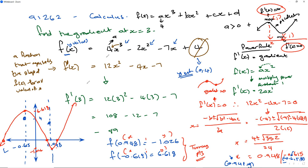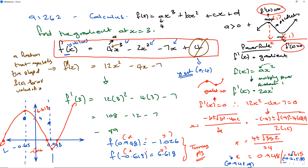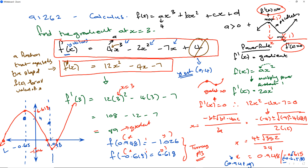Overall, we were given f(x) = 4x³ - 2x² - 7x + 4. We found the gradient function f'(x) = 12x² - 4x - 7. With the gradient function, we can substitute any x value — specifically when x equals 3, the gradient is equal to 89. And at the turning points, when x equals 0.948 and negative 0.615, the gradient equals 0. That's a quick summary of that first part.